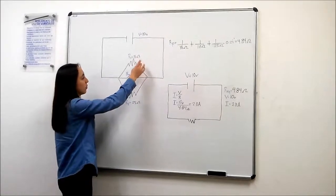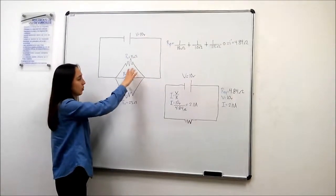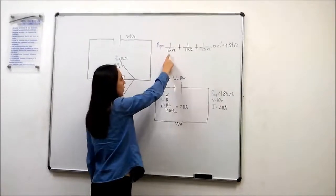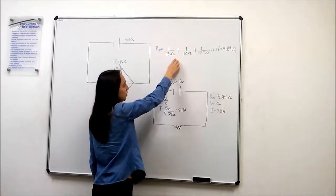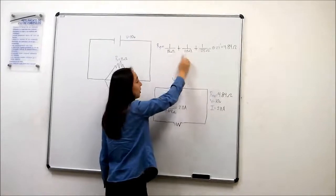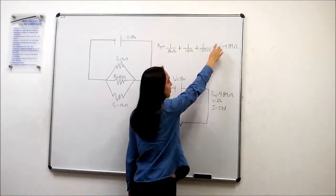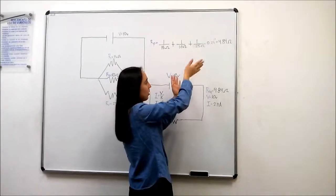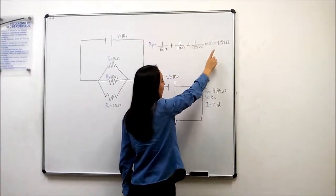We have some resistance and we have it in parallel. And in order to make this a series of one we need to use a formula. We need to sum each one of them but like in the quotient. So this and this plus this plus this and we have it to the minus one. So we need to take the reciprocal and we get a result of 4.84 ohms.